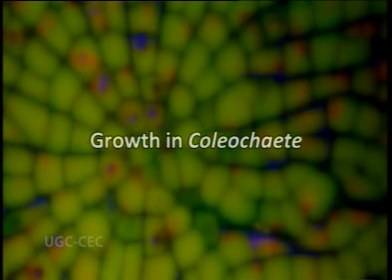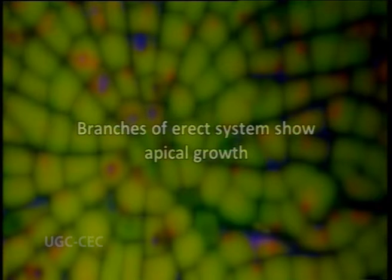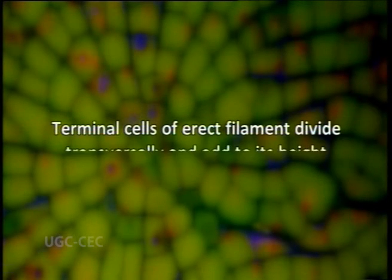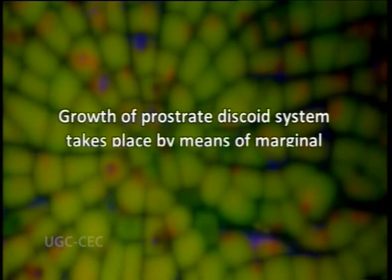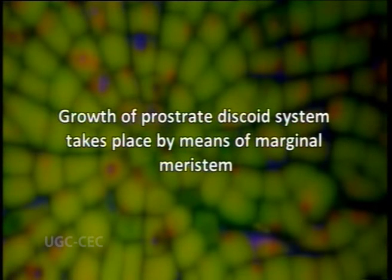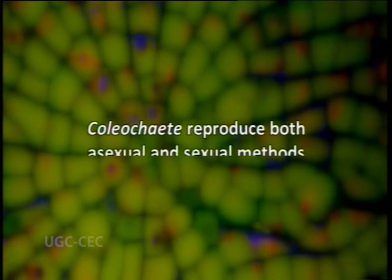Now let's discuss growth in Coleochaete. The branches of the erect system show apical growth. The terminal cells of the erect filament divide transversely and add to its height. The growth of the prostrate disc-like system takes place by means of marginal meristems. The erect branches originate as lateral outgrowths of the prostrate system.